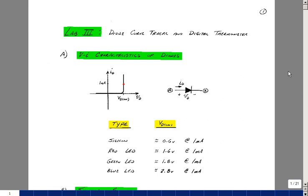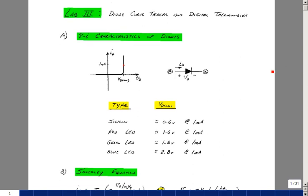Lab number three is entitled Diode Curve Tracer and Digital Thermometer. In ECE 302 we've been discussing the VI characteristics of diodes.